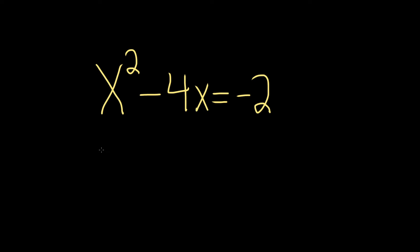In this problem, we're being asked to solve this equation by completing the square. When you're completing the square, two things should always be checked right away. First, you should have a 1 in front of your x squared, which we do. There's an invisible 1 there, because 1 times x squared is x squared.